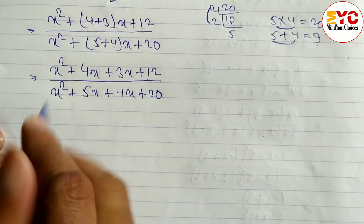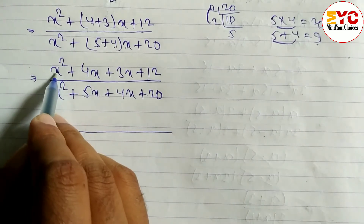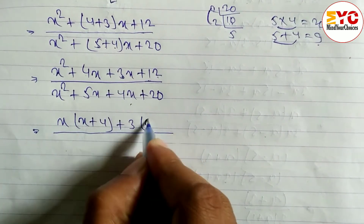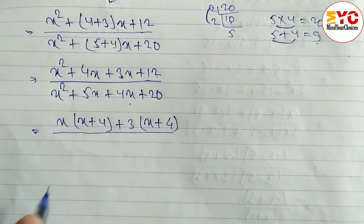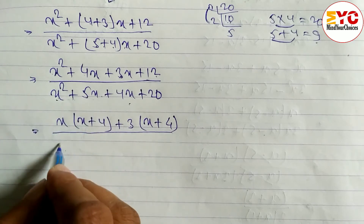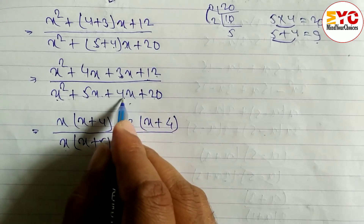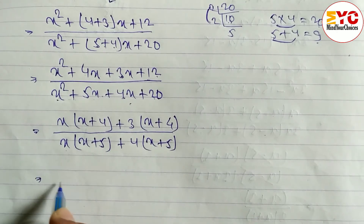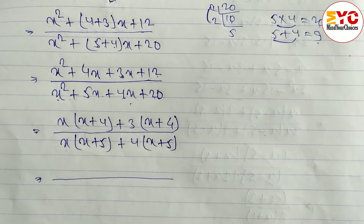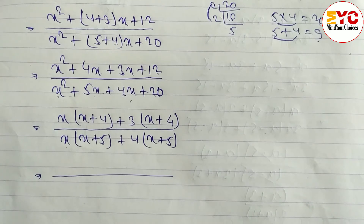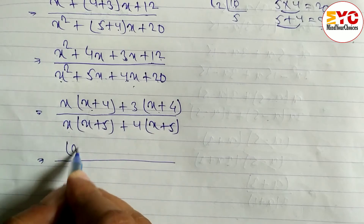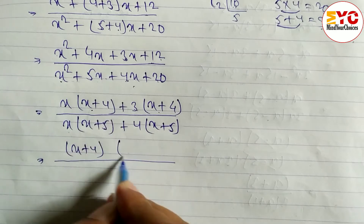Now we take common. From x² + 4x, take x common — remaining x+4. From 3x+12, take 3 common — remaining x+4. Similarly in denominator: from x²+5x take x common, remaining x+5; from 4x+20 take 4 common, remaining x+5. So x+4 is common in numerator, remaining x+3.